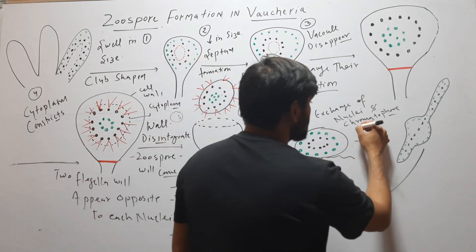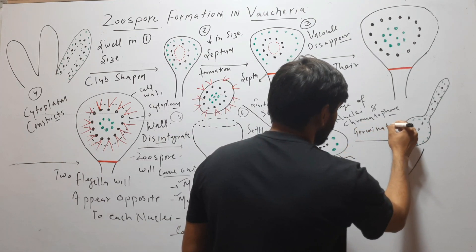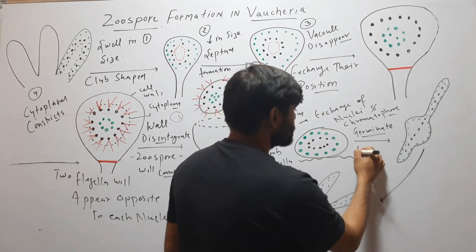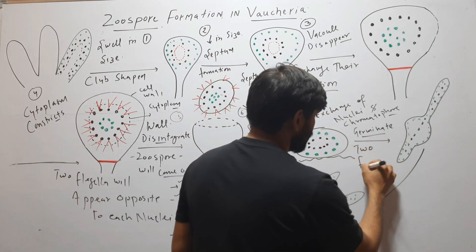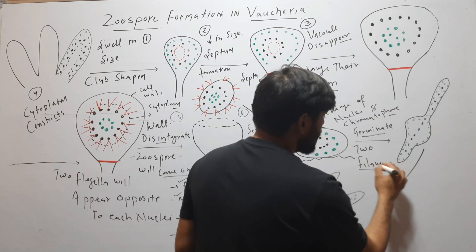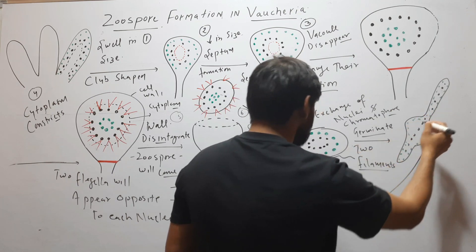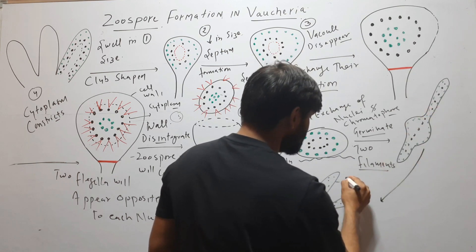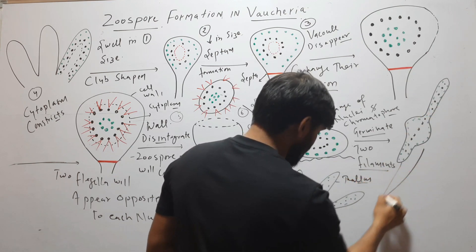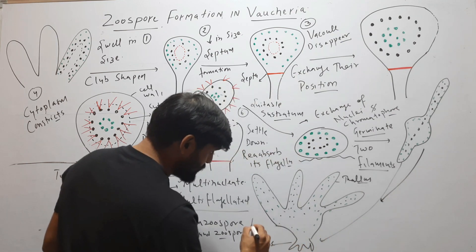After reabsorbing flagella and exchanging positions, it will germinate and form two filaments. One filament forms the thallus and the other filament forms the rhizoids.